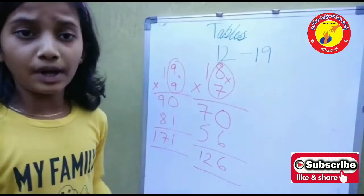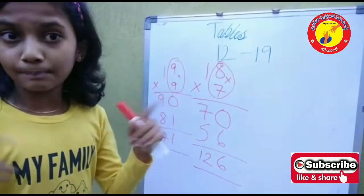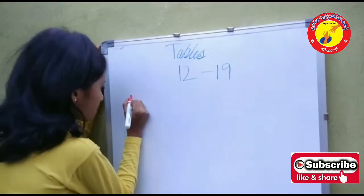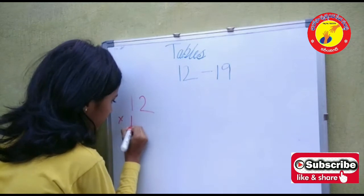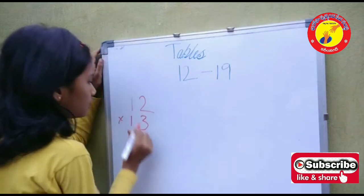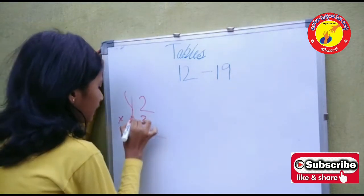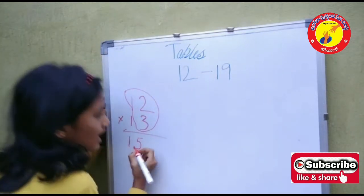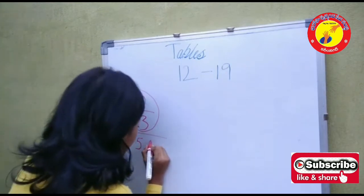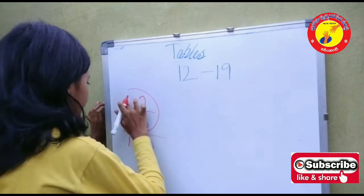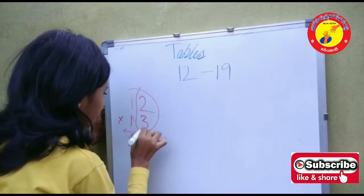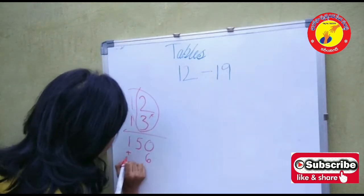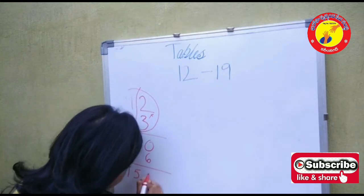If you practice this, you can do it in a fraction of seconds without using pen and paper. Let's do a couple of examples. 12 into 13. 12 plus 3 how much? Yes, it is 15. I am taking 0 in the 1's place. Now, 2 into 3 how much? Yes, it is 6. 150 plus 6 is equal to 156.